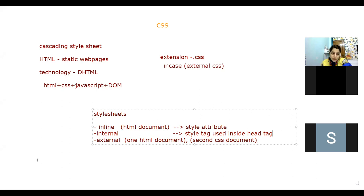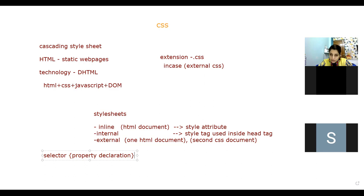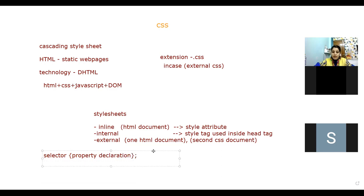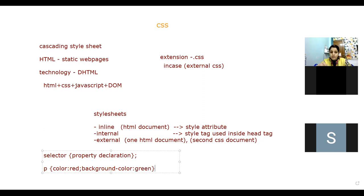The syntax for applying CSS involves a selector, then curly braces, then property declarations. For example, under a p tag you can set the color of text — color is a property, red is a value. When you want to add another property such as background-color, you separate multiple properties using a semicolon. No need to put a semicolon after the last property.